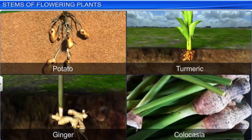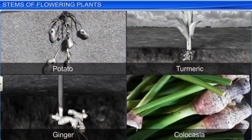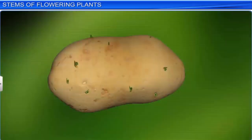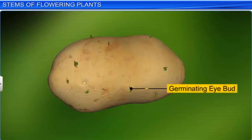A modified stem quite often looks different in structure from a normal stem. Underground stems of some plants like potato, turmeric, ginger, and colocasia are modified for storing food. Moreover, stems modified to store food help the plant to tide over unfavorable conditions of growth.